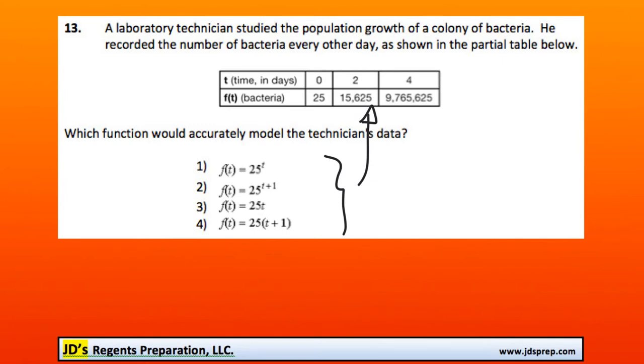We can find out which one is correct by replacing t with these numbers and see if we get an output, a y value of 25 in the case of 0. Let's look at the first solution, f(t) = 25^t. We're going to replace t with 0 and see if we get 25. Of course we don't because 25 times 0 is 0, so this one's clearly wrong.